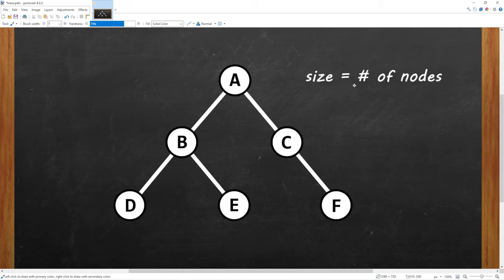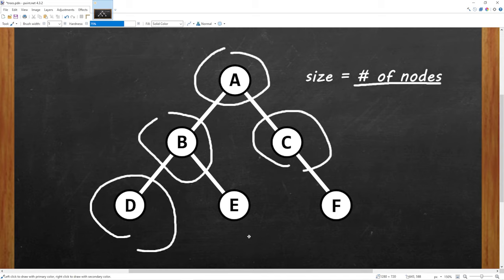The size of a tree is equal to the number of nodes. So what's the size of this tree? We have one node, two, three, four, five, six. The size of this tree is six.